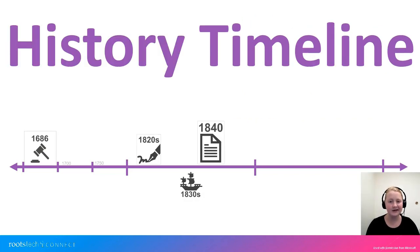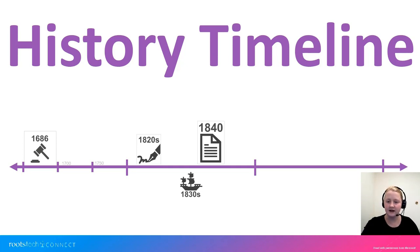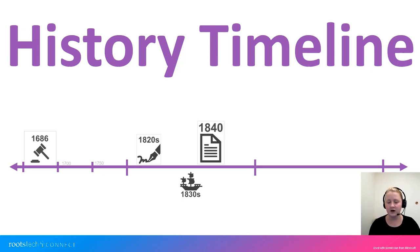1840 is a good date to remember because that's when you can start to access indexes for household exams. Before 1840, you really need to know the farm name to easily find an ancestor in household exams. After 1840, if you can't find the farm name, you can still find them using their name and an exact birth date. These indexes are on Archive Digital and MyHeritage, with similar indexes on FamilySearch and the Swedish National Archive starting in 1860. Between 1840 and 1860, a paid subscription is required, but after that, other free sites have them available.